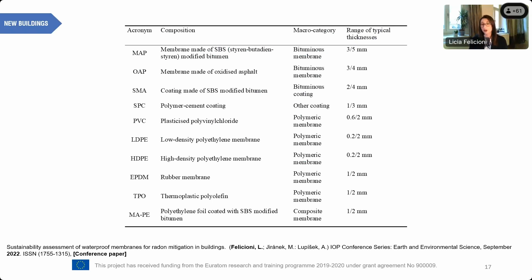Moving to the second point of the presentation: we examined waterproof membranes aimed at radon mitigation in buildings. We selected 10 different types of membranes differing in chemical composition and thickness, spanning macro-categories from bituminous membranes to polymeric and composite membranes. The range of thicknesses considered is limited to those that are effective for radon protection purposes — other thicknesses were excluded because their radon resistance would not be sufficient.